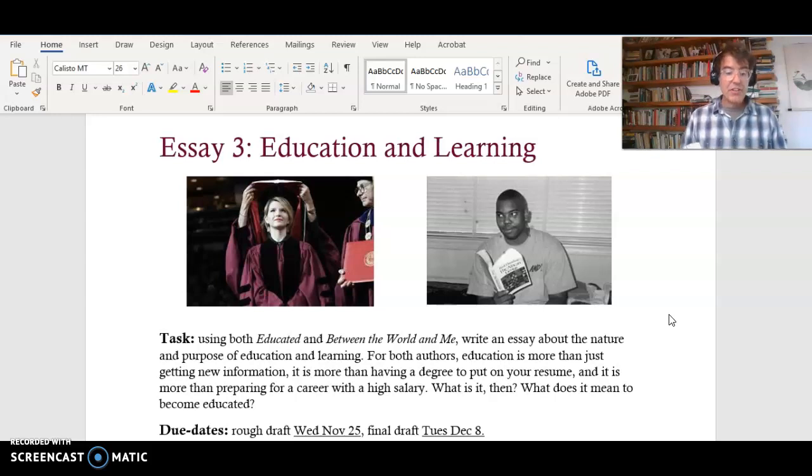So page 34 at the top: an unceasing interrogation of the stories told to us by the schools now felt essential. So this is during Coates' part about being in school, which starts on page 25. But we're on page 34 here. So he's been reflecting on what it meant for him to be in school as a kid.